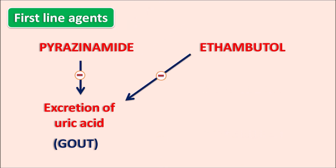Ethambutol can also produce optic neuritis, which results in color blindness. Patients are unable to discriminate certain colors, and it also results in some loss of vision and blurred vision.